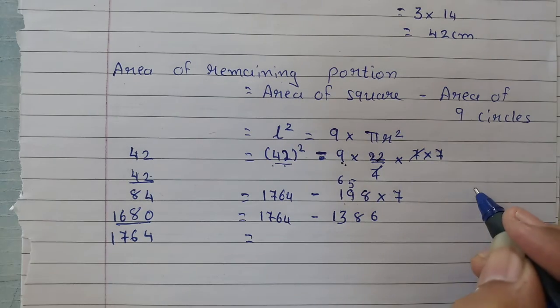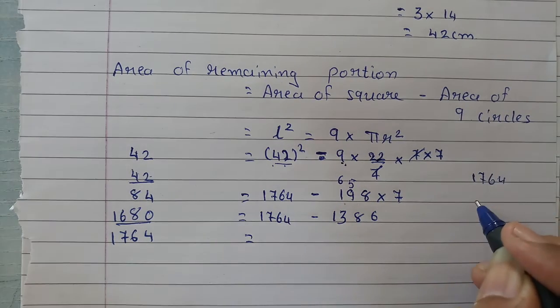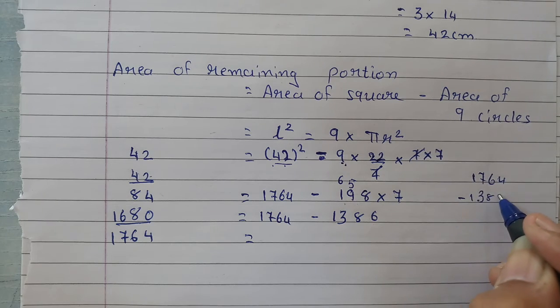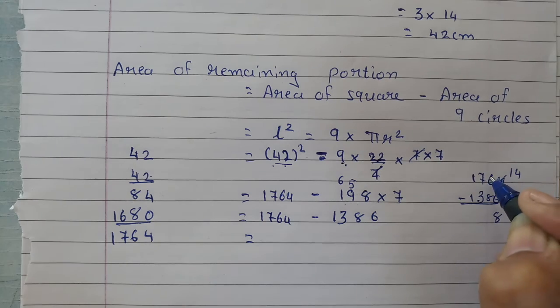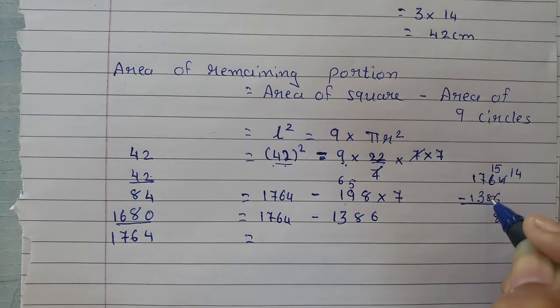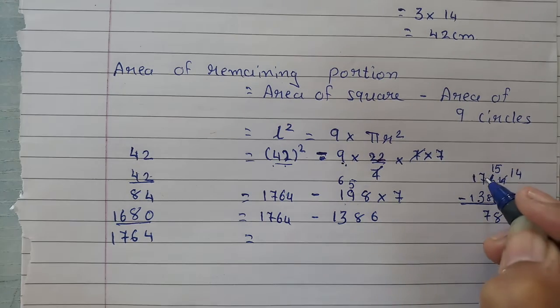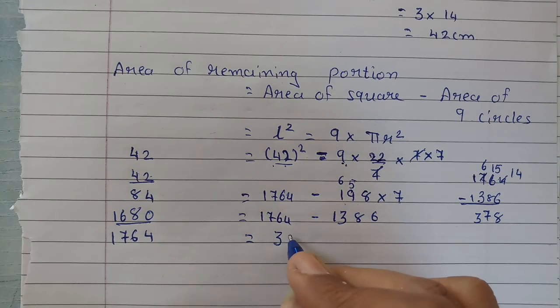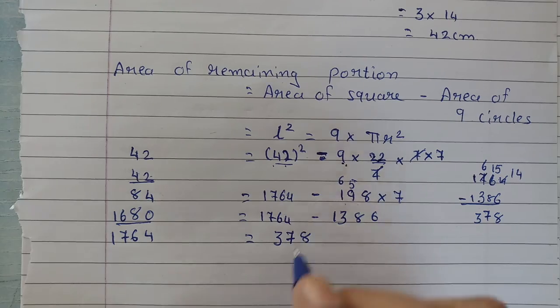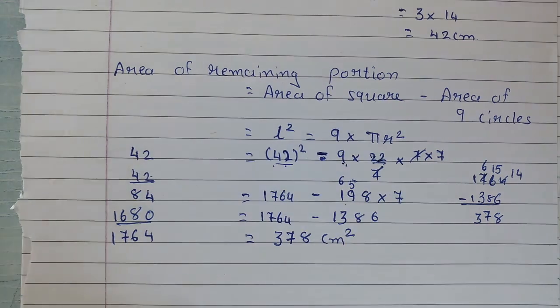Now on subtracting, 1764 minus 1386. Here we will have 14, 14 minus 6 is 8. Here we will have 15, 15 minus 8 is 7. Here we will have 6 minus 3 is 3. So our area of remaining portion is 378 centimeter square.